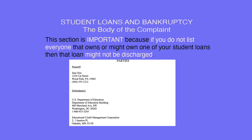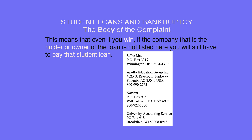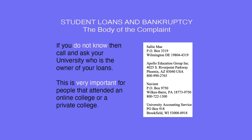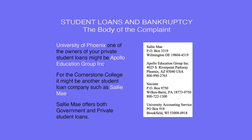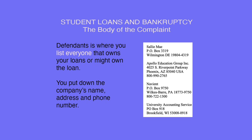The next heading says Parties. You are telling the court who you are and who you are suing. This section is important because if you do not list everyone that owns or might own one of your student loans, the loan might not be discharged. This means that even if you win, if the company that is the holder or owner of the loan is not listed, you will still have to pay the student loan. If you do not know, call and ask your university who is the owner of your loans. This is very important for people that attended an online college or a private college. For example, for the University of Phoenix, one of the owners of your private student loans is Apollo Education Group Incorporated. For Cornerstone College, it might be another student loan company such as Sallie Mae. Sallie Mae offers both government and private student loans.